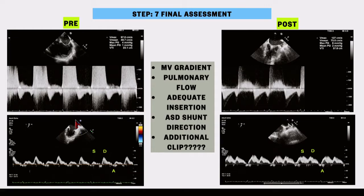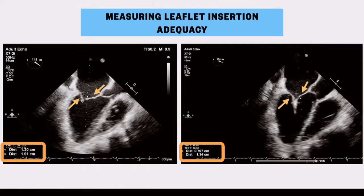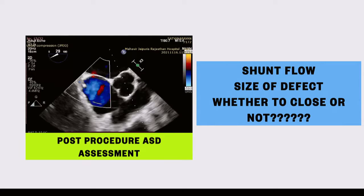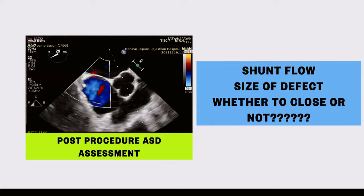We are not looking for zero MR reduction. In the COAPT trial, more than 50% reduction in mitral regurgitation was adequate to help patients with functional MR. To measure leaflet insertion adequacy: measure the leaflet length first, then after clip implantation measure the length from the tenting position to know how much leaflet is inside the clip. For the ASD shunt, if it is left-to-right, we don't close these — as Professor Sievert pointed out — unless the patient has a right-to-left shunt.